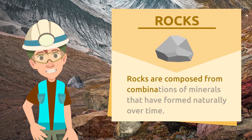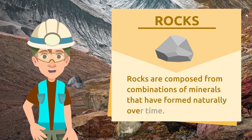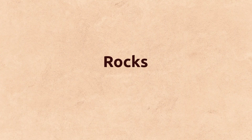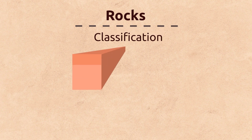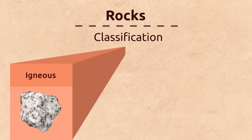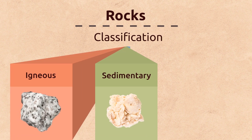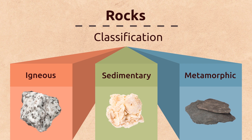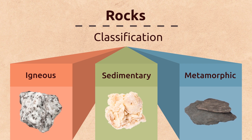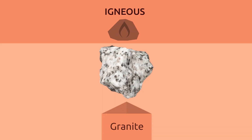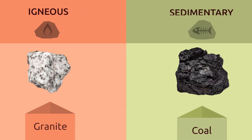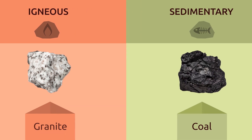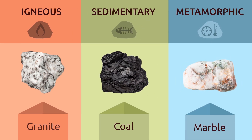Rocks are composed from combinations of minerals that have formed naturally over time. On the basis of their origin, rocks can be classified as igneous, sedimentary, and metamorphic. Let me show you some examples of rocks — this is granite, rock coal, and marble.